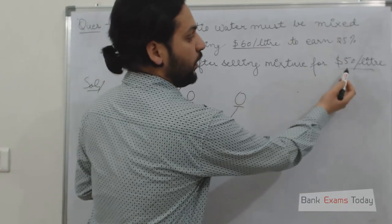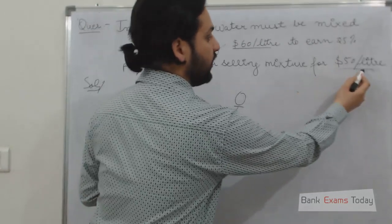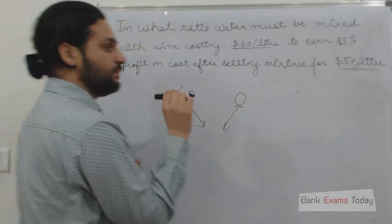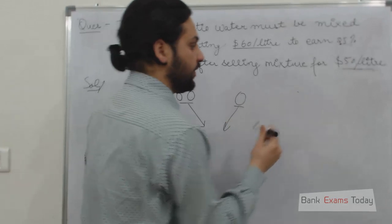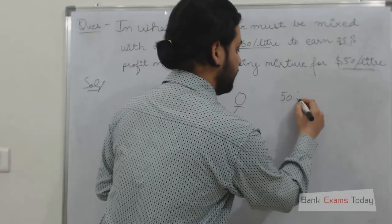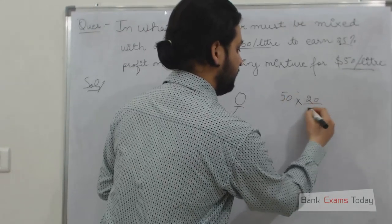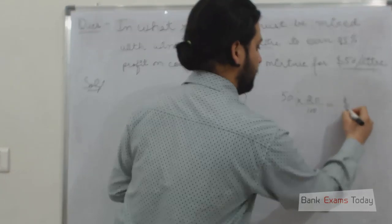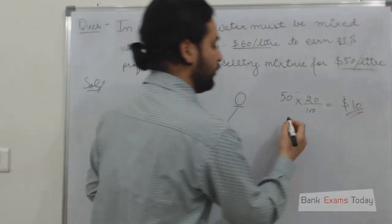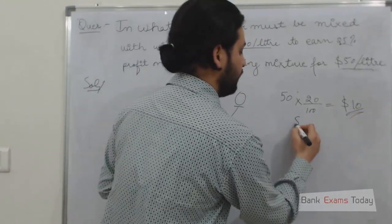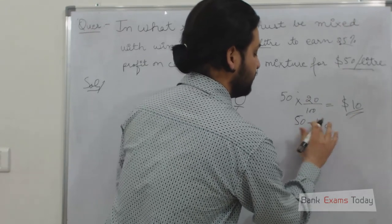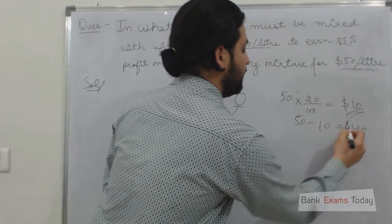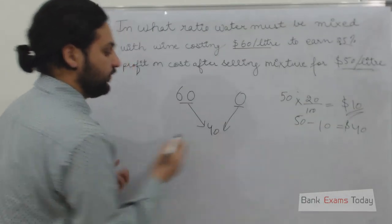The person is selling the mixture for 50 dollars a litre, making a 25% profit on cost. A 25% profit on cost means 20% on selling price. So what is 20% of 50 dollars? It will be 10 dollars. That 10 dollars is the profit. So what would be the cost of that mixture? It would be 50 minus 10, which equals 40 dollars a litre. So here the weighted average, that is the cost of the mixture, is 40.